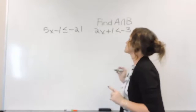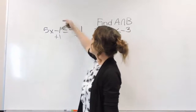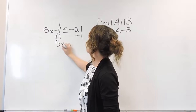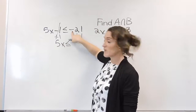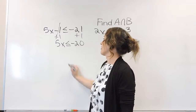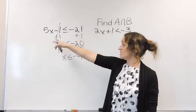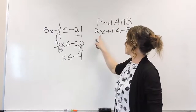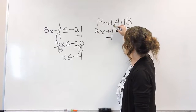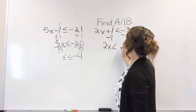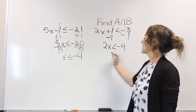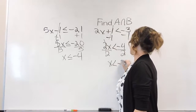Let's do another example on graphing the intersection of two linear inequalities. The first thing we need to do is solve both inequalities. Starting with the one on the left — add 1 to both sides, negative 1 plus 1 cancels, drop down to 5x less than or equal to negative 20. Divide both sides by the coefficient and x is less than or equal to negative 4. For the other one, subtract 1 on both sides, 1 minus 1 cancels, drop down to 2x less than or equal to negative 4, divide both sides by 2, and x is less than negative 2.